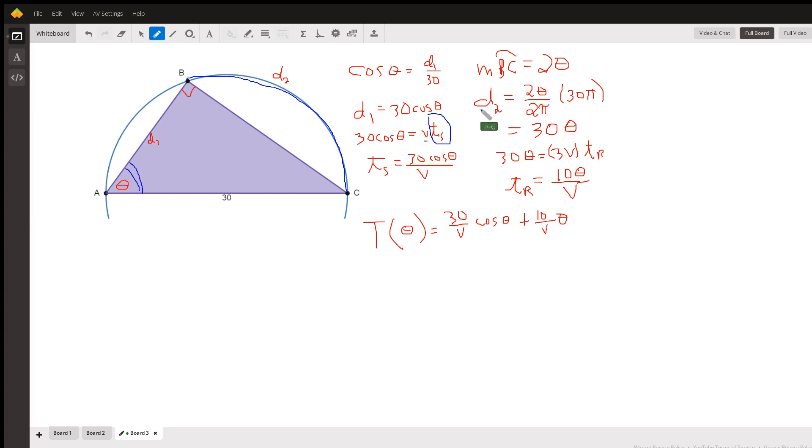The distance is the fraction of the total circumference. So if the measure of this arc is 2θ, that's 2θ over 2π, which is the fraction of the total circumference. If you reduce that you get 30θ. So if we use distance equals rate times time, the time for him to run is 30θ divided by 3v, which reduces to 10θ over v.